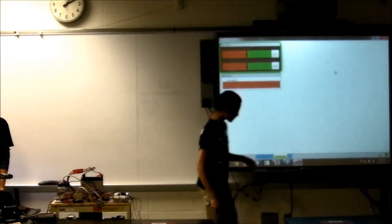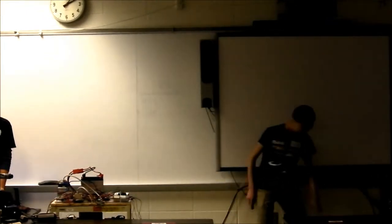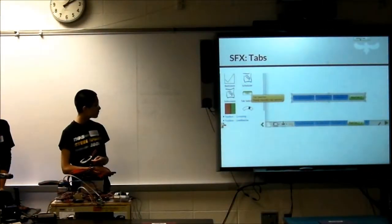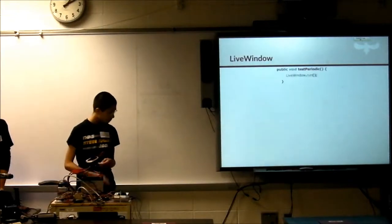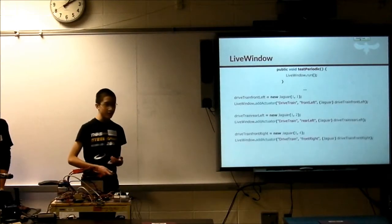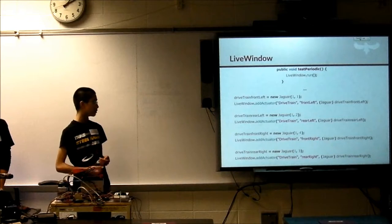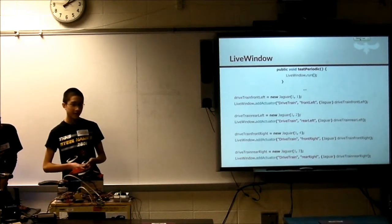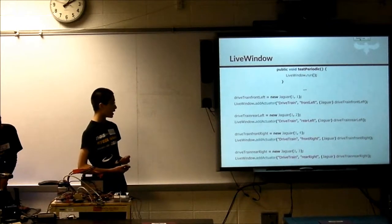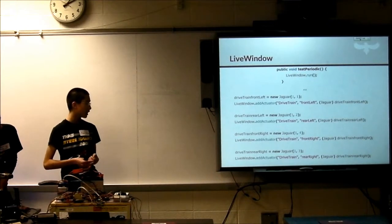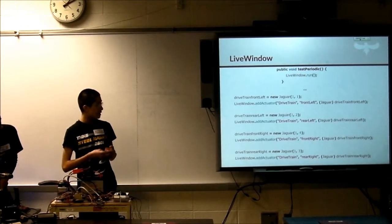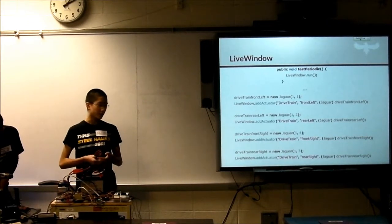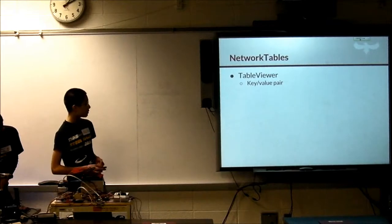Live window in your code is the same as last year. You would just add one line, add it to live window. LiveWindow.addActuator, and you'd have an actuator or a sensor. So this would be adding a Jaguar speed controller. You would do LiveWindow.addActuator with the subsystem and then the name you're giving to it and the actual object in the code for a command based program.